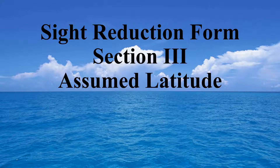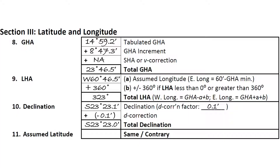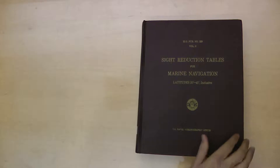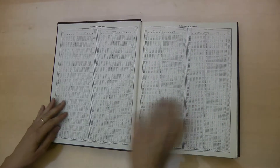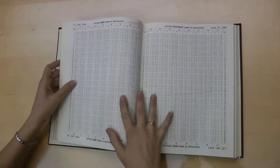In this video, we'll offer some tips on choosing your assumed latitude. An assumed latitude must be kept in whole degrees with no arc minutes. This is simply to keep the sight reduction tables reduced to a small number of books.